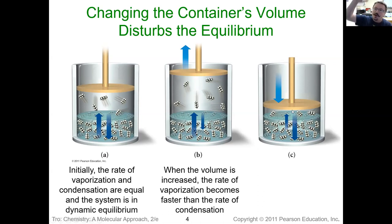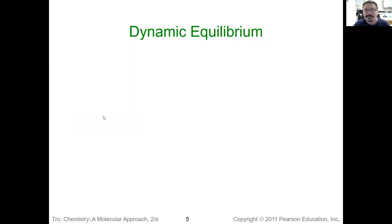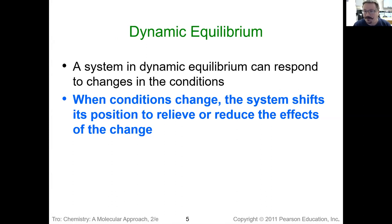Or we can do the opposite — push that piston down, decrease the area, in which case we're temporarily going to get a spike in pressure. What's going to happen? More of those gas molecules are going to condense. We're going to have less vapor until the vapor pressure in C is equal to the vapor pressure in A. So what does that tell us about dynamic equilibrium? If we make changes to the conditions — pressure, temperature, or number of molecules — we're going to see a shift in the system until equilibrium is established again.